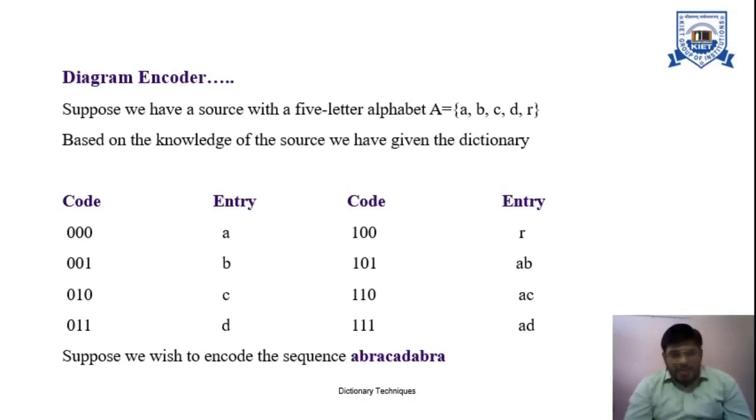We will start by selecting two pairs of characters in that particular sequence. Select the first two characters, ab.